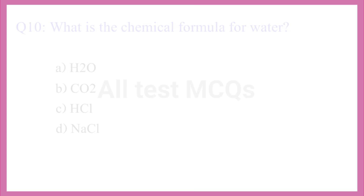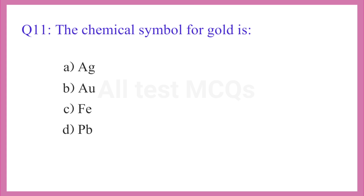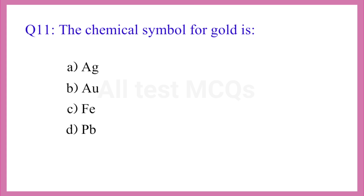Question No. 11. The chemical symbol for gold is? The correct answer is option B. AU.